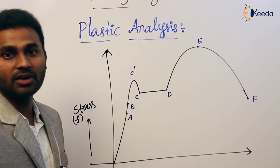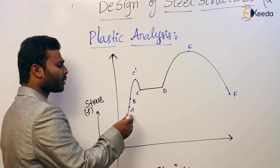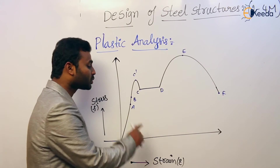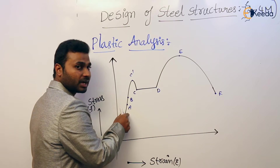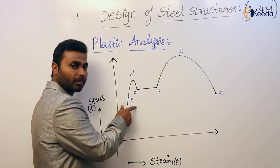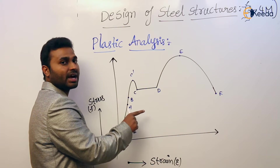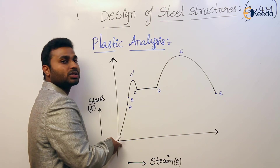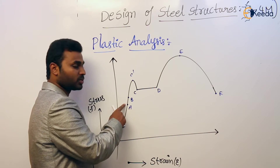This is the stress-strain curve of mild steel. Coming to the proportional limit — up to point A, the material, mild steel, obeys Hooke's Law. That is the significance of point A: it is the proportional point. Up to this point, Hooke's Law is valid, meaning stress is proportional to strain.